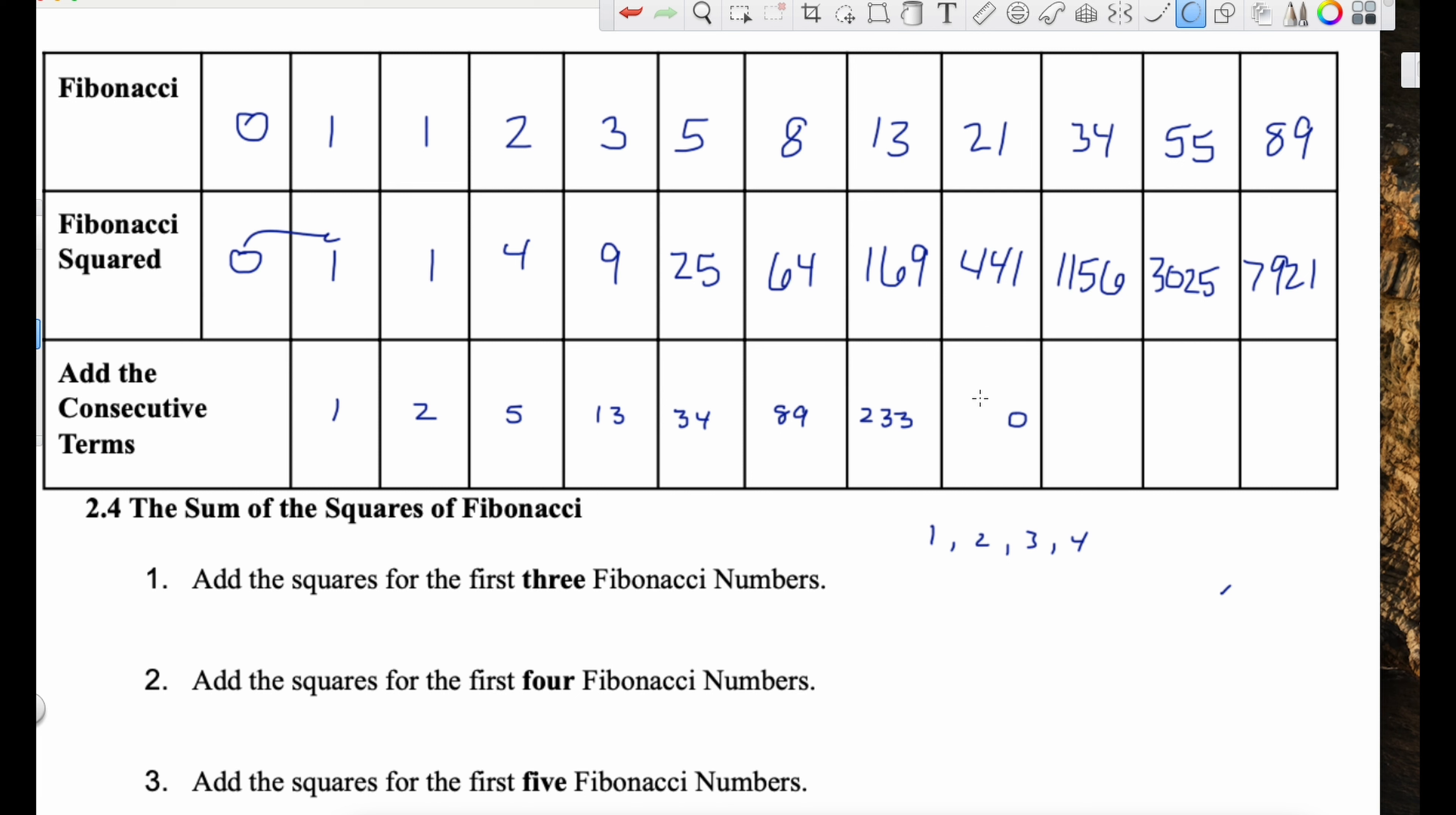Let's do for the first four. So zero, zero plus one plus one plus four is six. And we've got zero plus one plus one plus four plus nine. So I'm just adding the next number in the sequence. So essentially that's six plus nine, right? Fifteen.